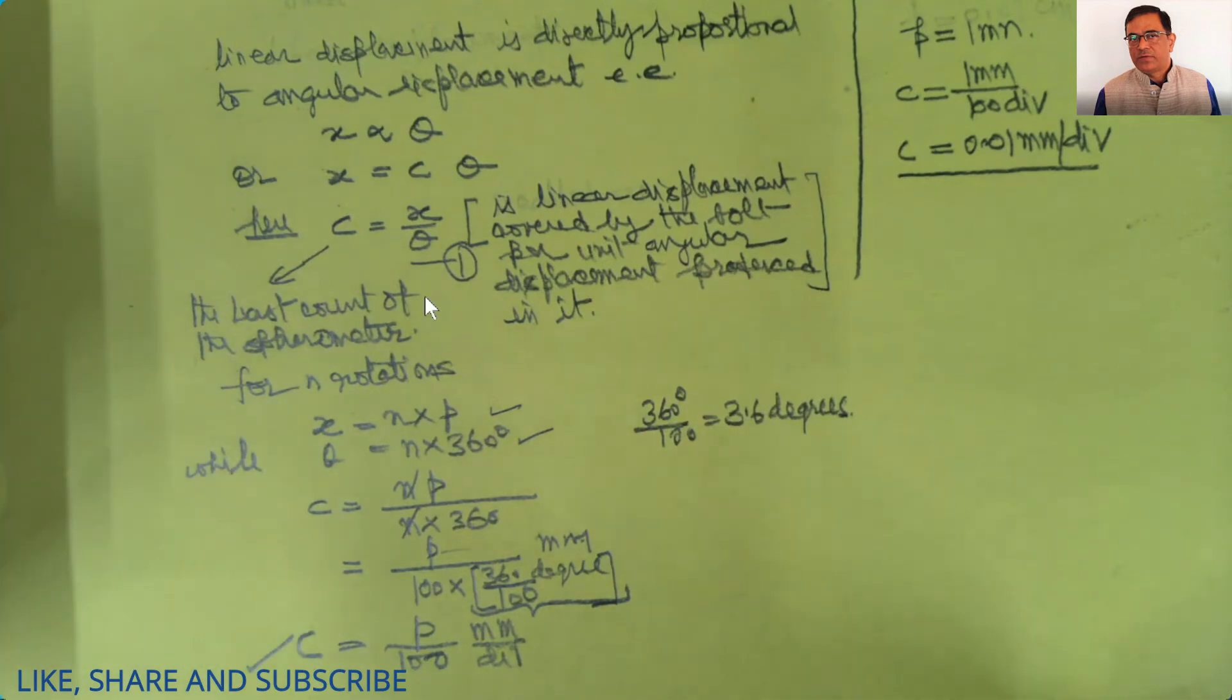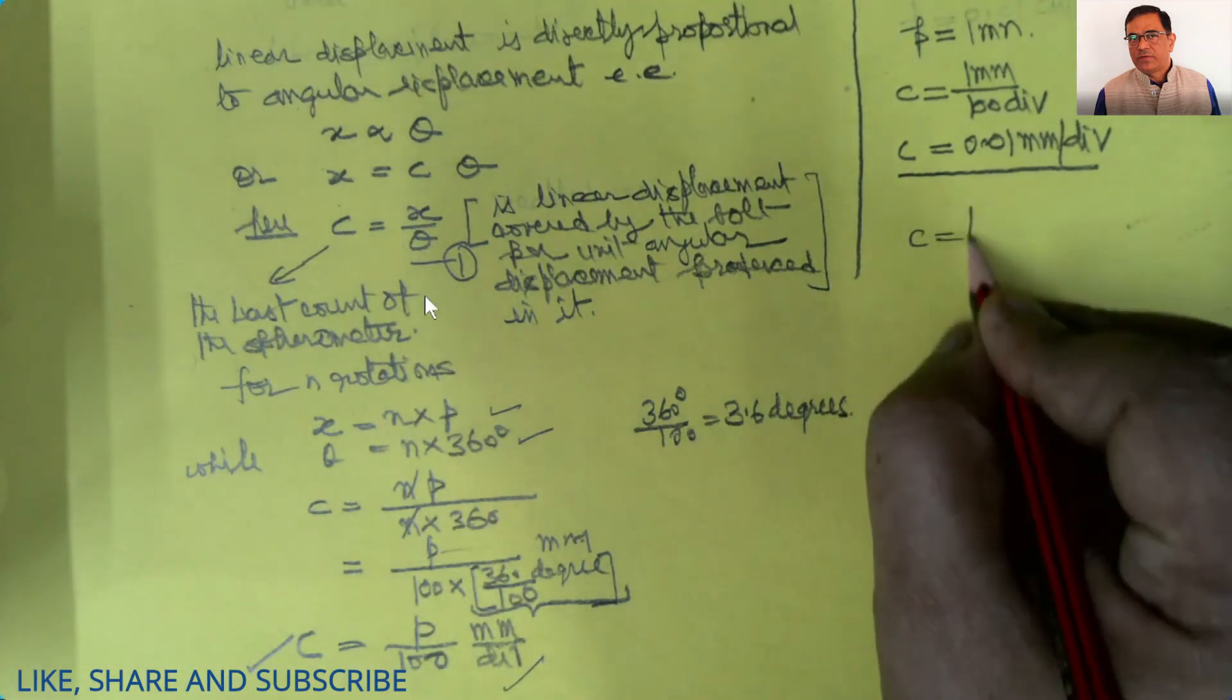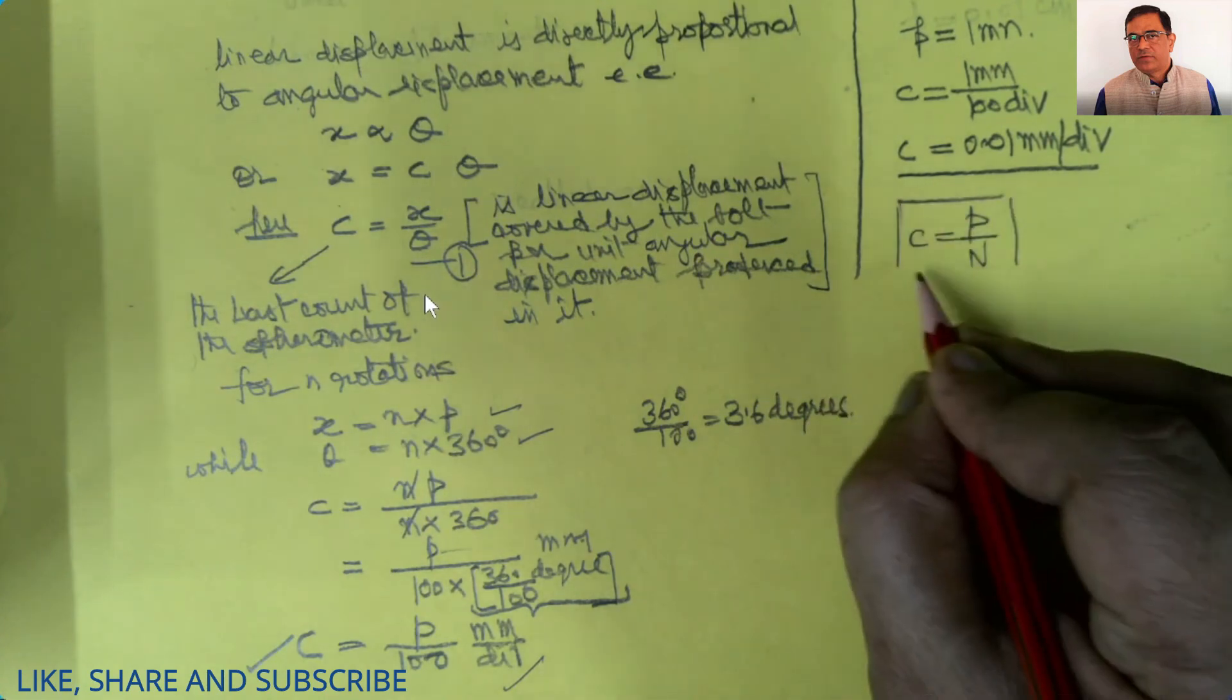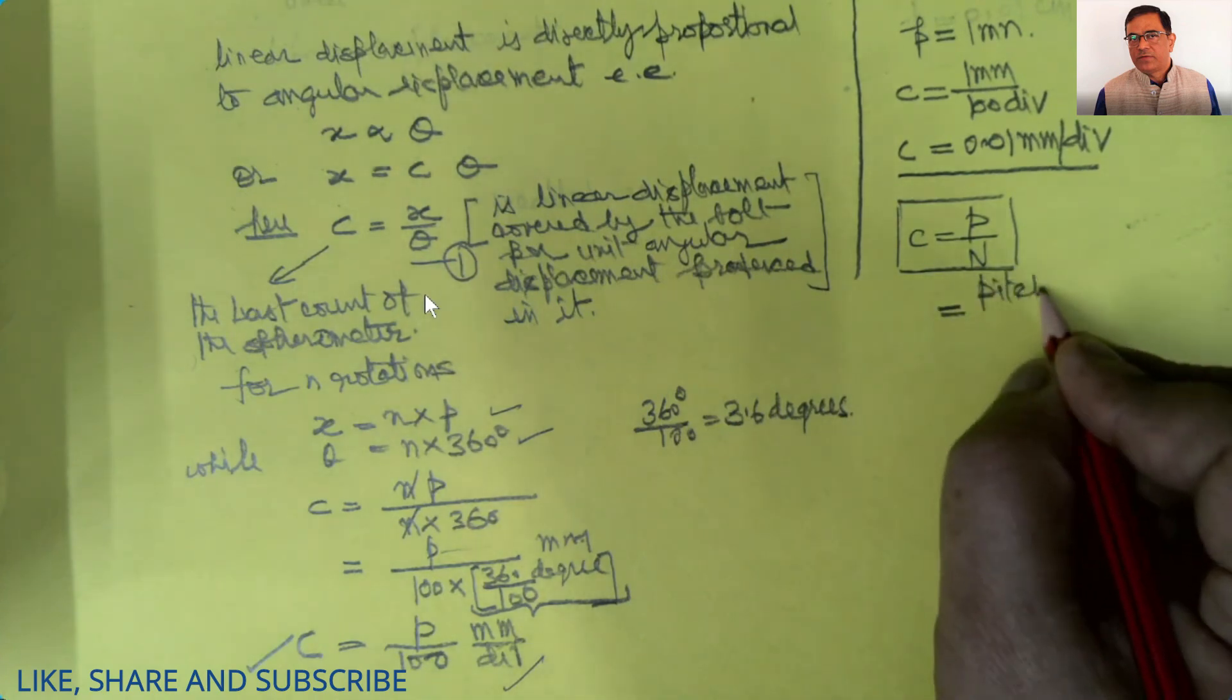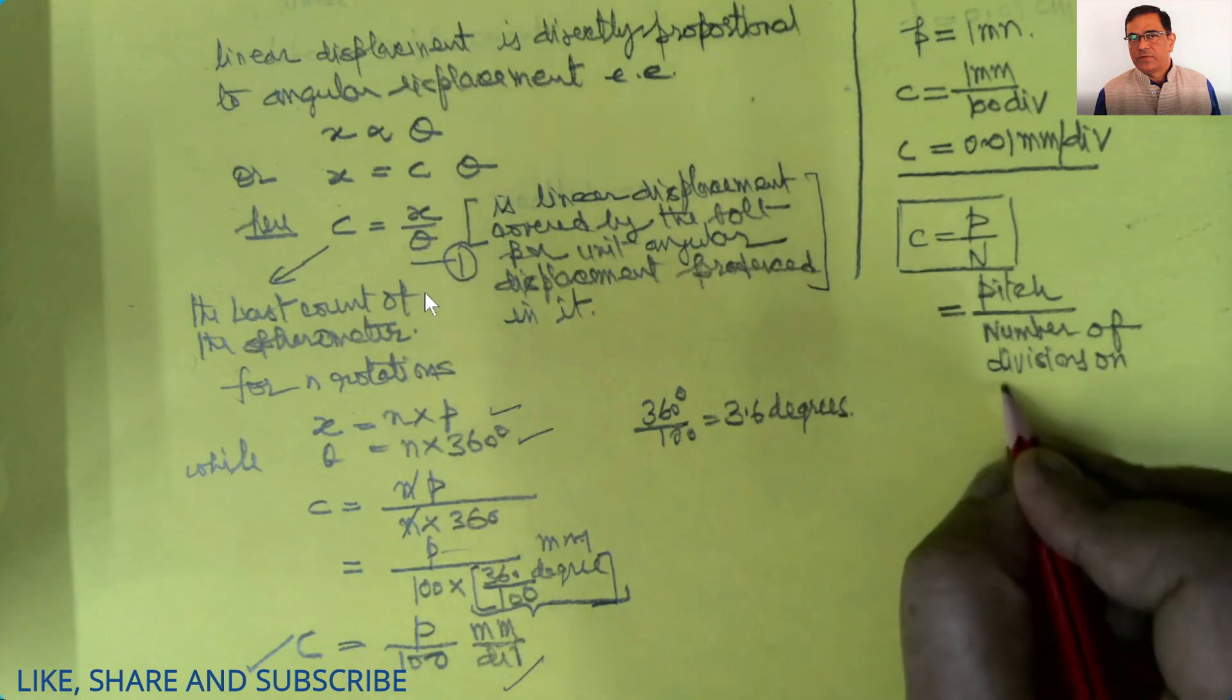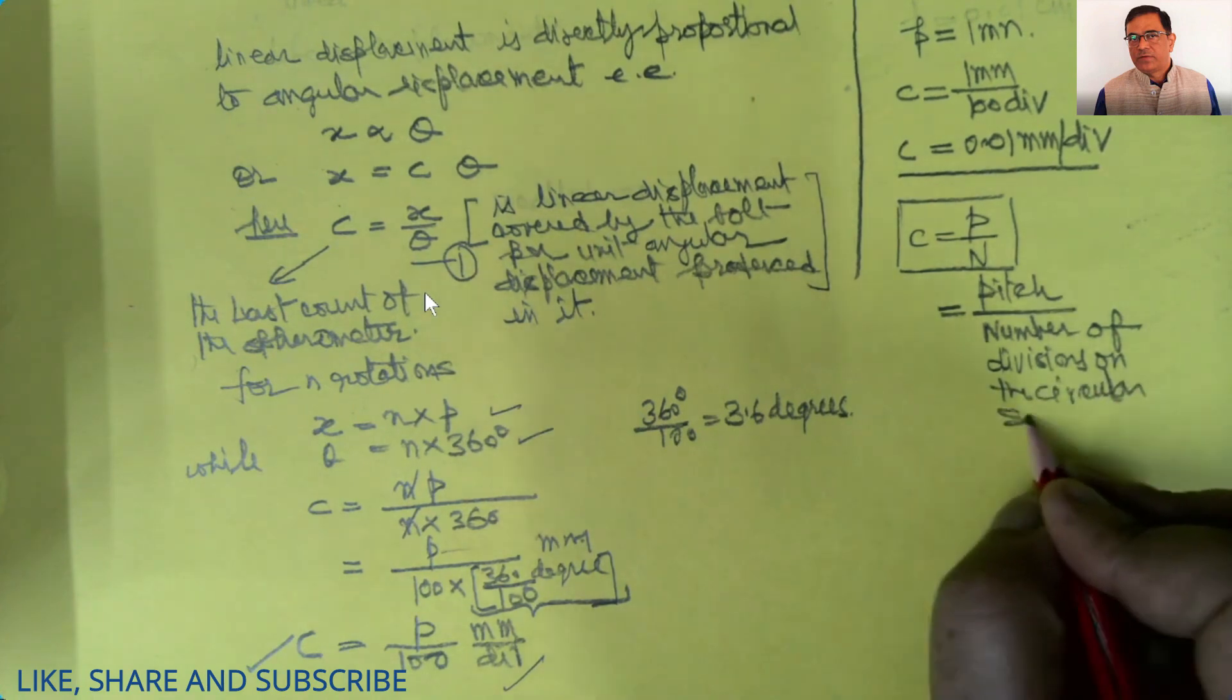In general, if the number of divisions on a circular scale is n, then this formula can be rewritten as c equals p divided by n. Thus, the least count of the spherometer equals pitch upon the number of divisions on the circular scale.